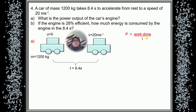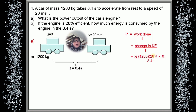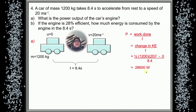For the power, we use the formula work done over time. Work done can be found using the change in kinetic energy from the work-energy theorem. We have initial and final velocities, so we use half MV squared minus half MU squared. The initial velocity U is zero, so the initial kinetic energy is 0. The final kinetic energy is half times 1,200 times 20 squared. So the calculated power output is 28,600 watts, which converts to 3 significant figures.